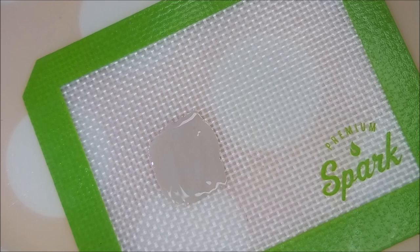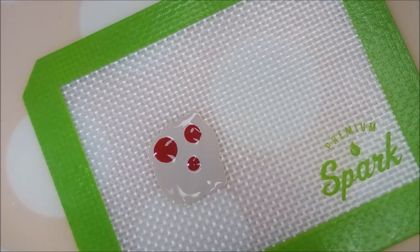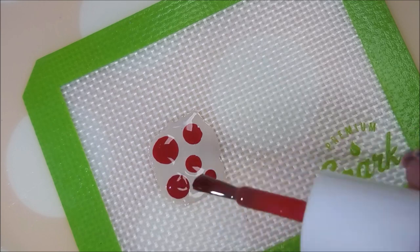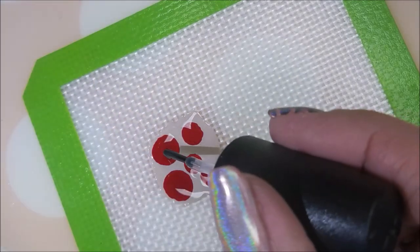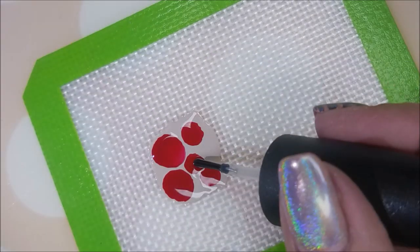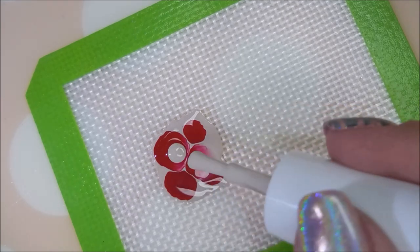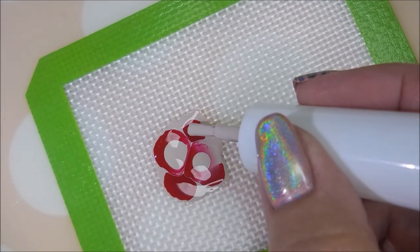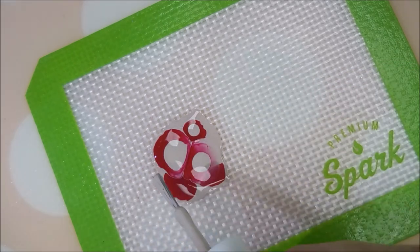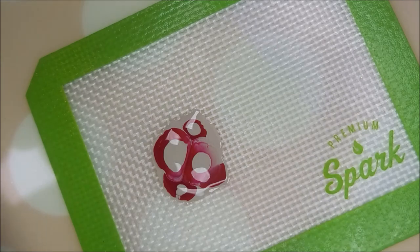So I'm using a tan polish just to put down a square of colors and then I'm going to dot in some of the other colors. Tan and red looks good together. I'm doing this all on my little mat so that I can squish it.